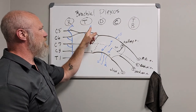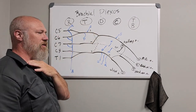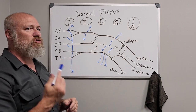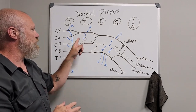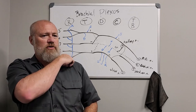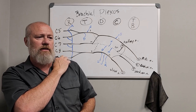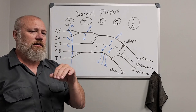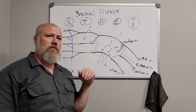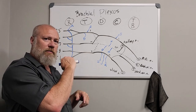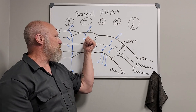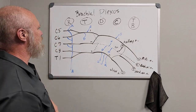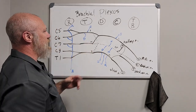Dorsal scapular and long thoracic noted. Branch C — usually hard to find because it's very proximal — is the nerve to subclavius, innervating that small subclavius muscle. Branch D is the suprascapular nerve, which passes through the suprascapular notch under the ligament crossing it. A useful mnemonic: 'the army goes over the bridge, the navy sails under' — so the nerve (navy) goes under the ligament, and the suprascapular artery (army) goes over it.